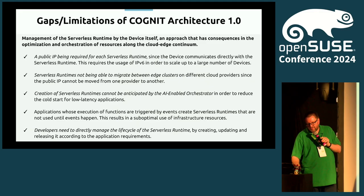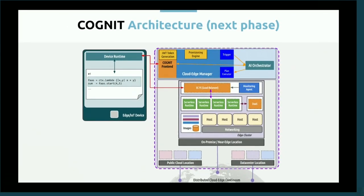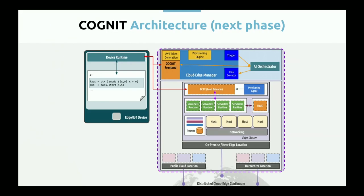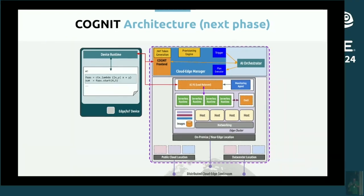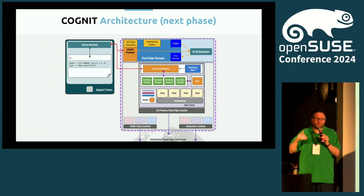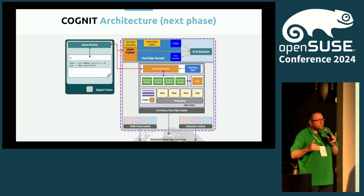So we changed the architecture: everything from the client now goes through a front end — not directly to the provisioning engine. On the cluster side, there's an edge cluster front end acting as a load balancer, so there is no direct connection between the device client and the serverless runtime doing the computation. This gives us a different ability to organize and move workloads, since control over serverless runtimes is completely at the management level.